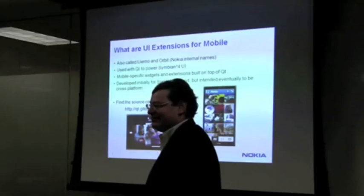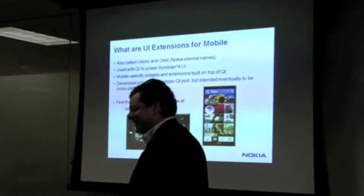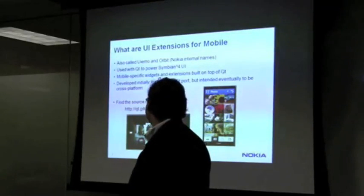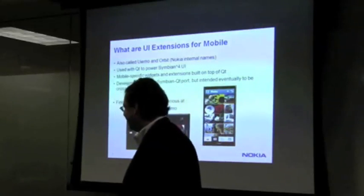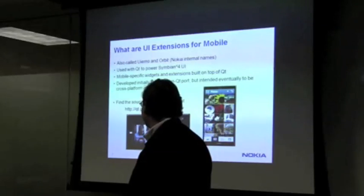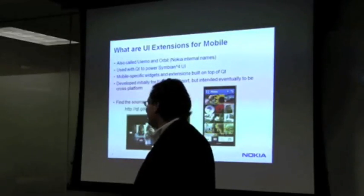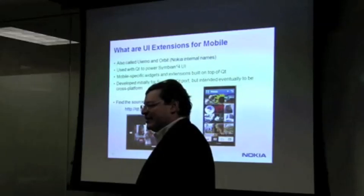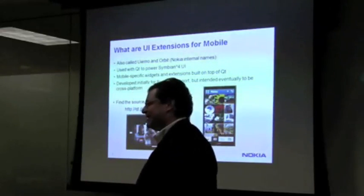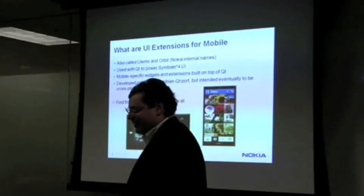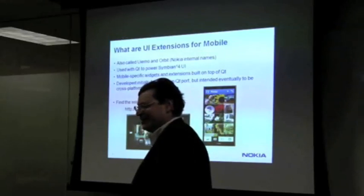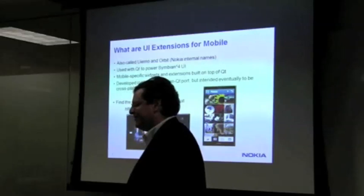Both of these are actually project names, so there might be other names coming in the future. We've been told Orbit is okay to use, and UI extensions for mobile is okay to use. The really exciting thing is it has been open sourced as of about three weeks ago at Gitorious — that is the link. Now with the open sourcing of Orbit, you have Symbian, Qt, and Orbit all open sourced. Basically everything is out there — you can download the code, build it, and hack around with it.